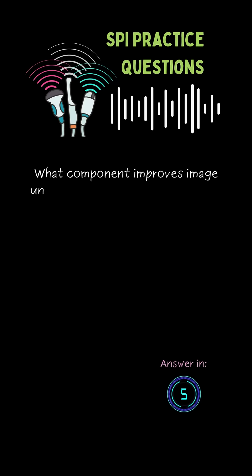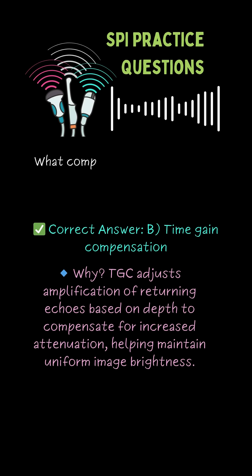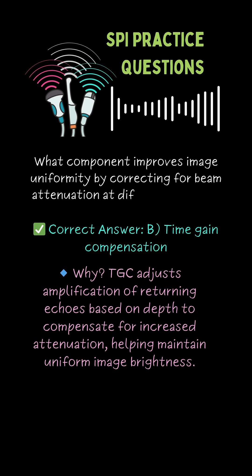What component improves image uniformity by correcting for beam attenuation at different depths? B. Time gain compensation.